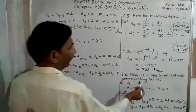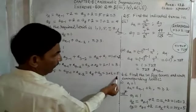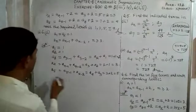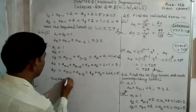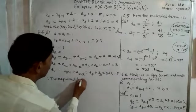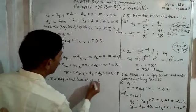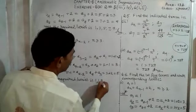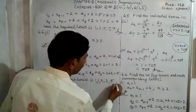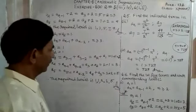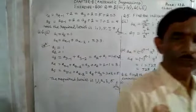The question asks to find the first 5 terms and write the corresponding series. Therefore, the required series is: 1, 1, 2, 3, 5. That is the answer of the sum. Thank you, my dear students. We will continue our classes. Thank you.